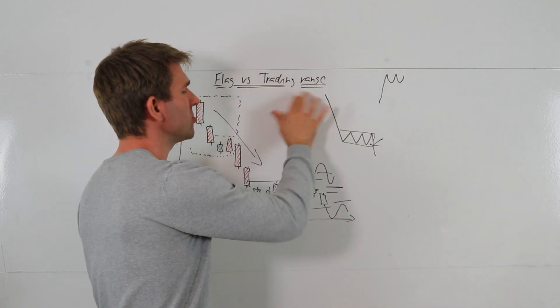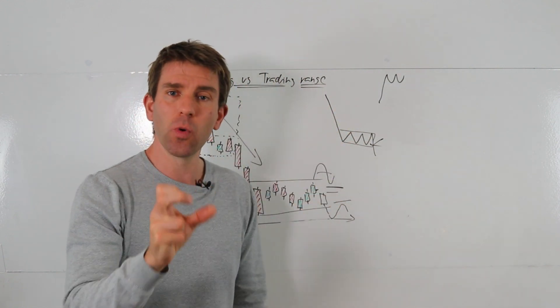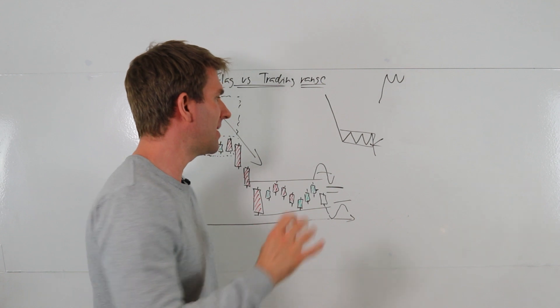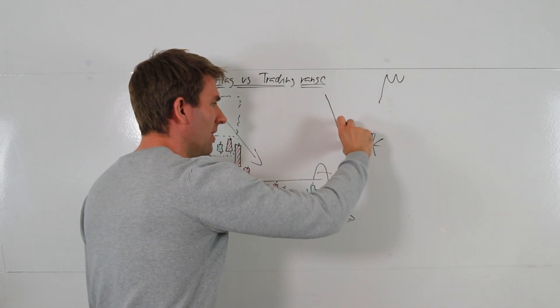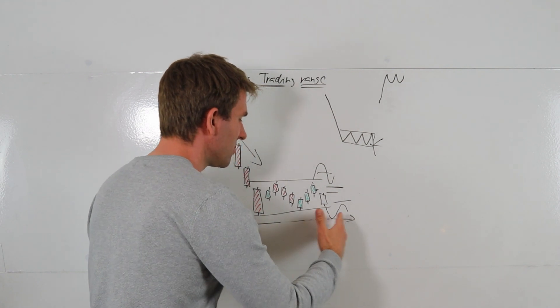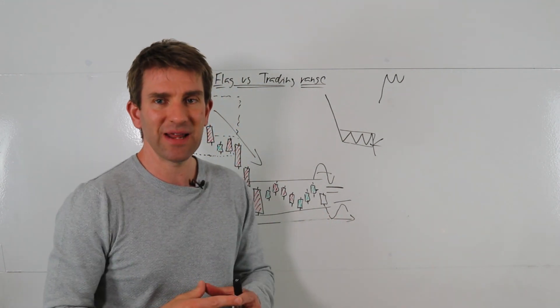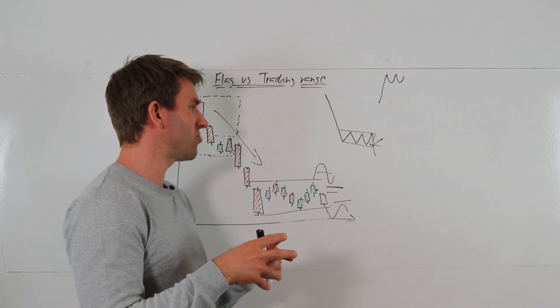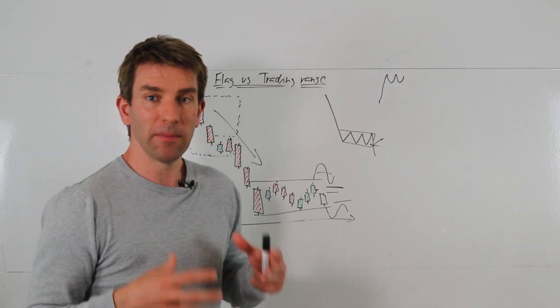Flag versus trading range. Flags tight, quick, tends to be after a big momentum thing, short and shallow. In the lower end of the range as well, not looking for a longer period of time. Volatility not necessarily having time to contract too much, volume not having time to contract too much. It's a short bit of a pause.